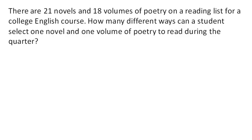So let's look at another one. Suppose there are 21 novels and 18 volumes of poetry on a reading list for an English course. How many different ways can you select one novel and one volume of poetry? Well, there are 21 choices for the novel and 18 choices for the poetry. We multiply those together, and that gives us a total of 378 possibilities.